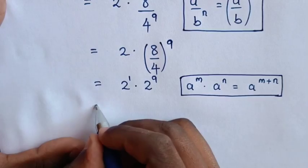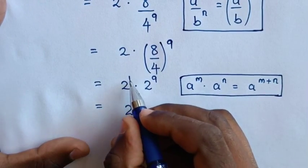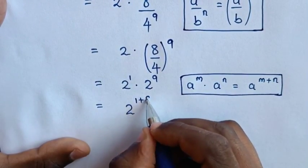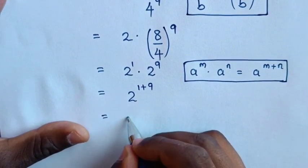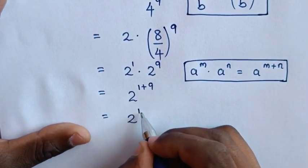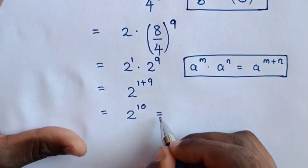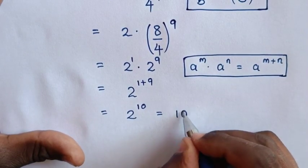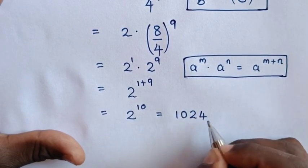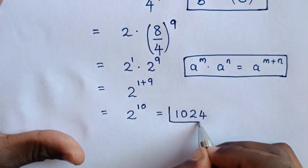Then this will be equal to 2 power of 1 plus 9, which is equal to 2 power of 10, which is equal to 1,024. So this is our final answer.